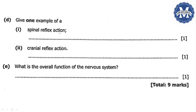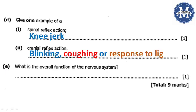This is our question D. Give one example of a spinal reflex action. One example of a spinal reflex action, we can say knee jerk. Then we come to question D2. Give one example of a cranial reflex action. One example of a cranial reflex action can include, number one, blinking, number two, coughing, or we can say response to light. These are examples of cranial reflex action. We have answered our question D.